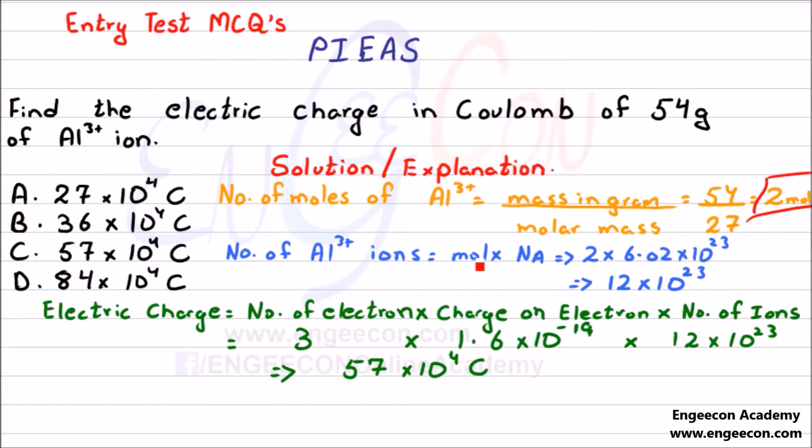Number of ions is equal to mole multiplied by Avogadro's number. In this case we have 2 moles multiplied by Avogadro's number which is equal to 12 × 10²³.